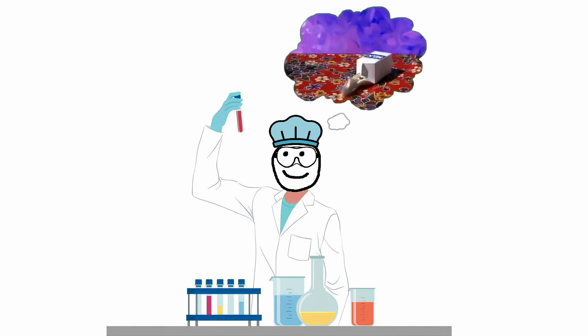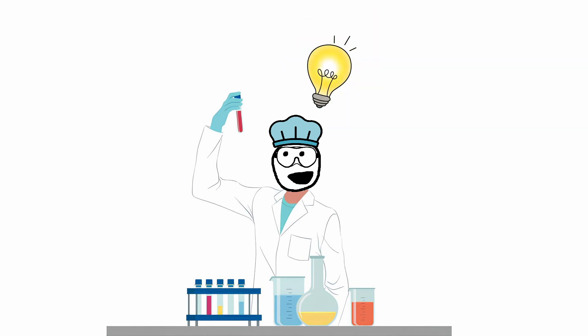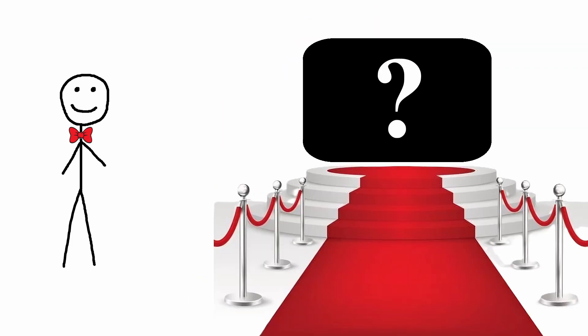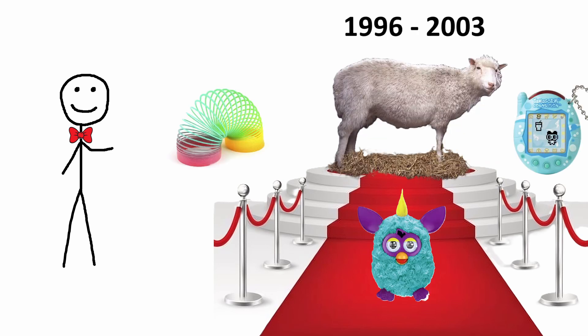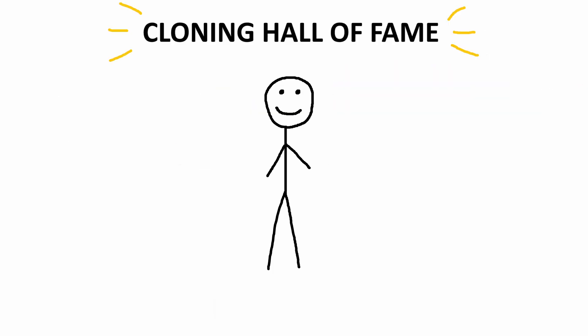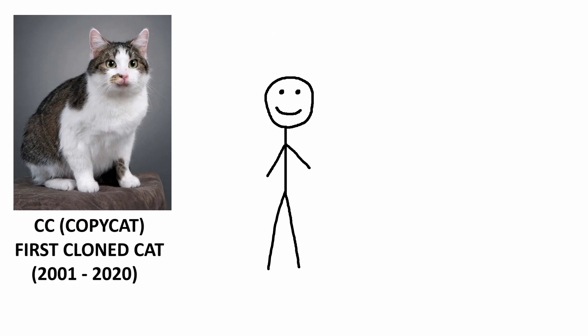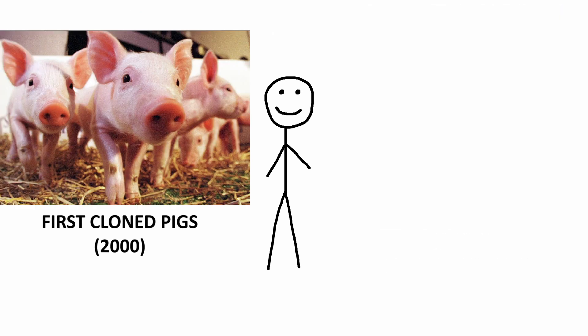So even though cloning is a very complicated process that has been around since the 1950s, there have actually been some successful cases. One of the most famous examples is Dolly the Sheep, who was born in the mid-90s. Other animals that have been cloned include cats, dogs, pigs, and horses.